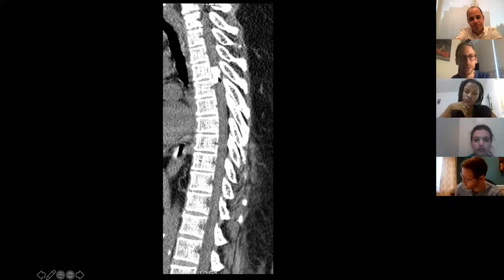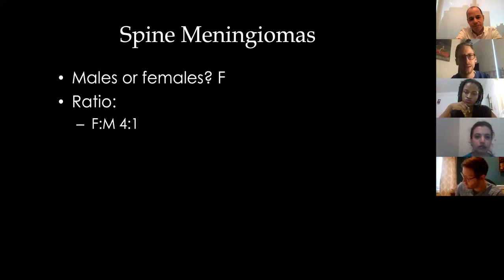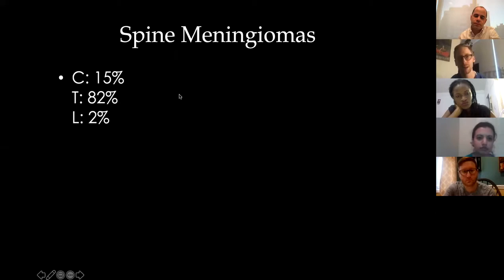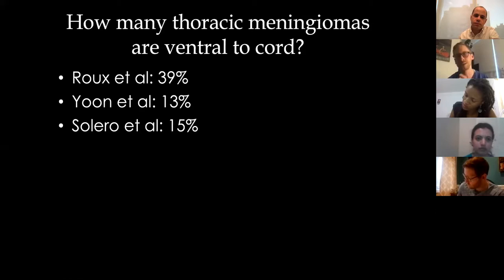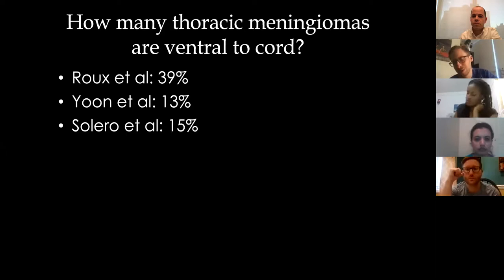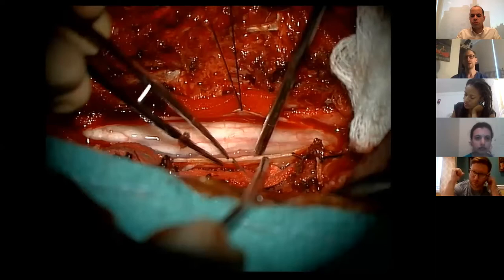This ended up being a meningioma. A very basic overview: they affect females more than males with a ratio of four to one — a significant female predominance. They're predominantly thoracic. There are two things that make this case challenging: number one, it's ventral to the spinal cord, so the spinal cord will be in our way; and the second thing is that it's calcified. How often are these tumors in front rather than behind the spinal cord? Three studies show between 13% and 40% of the time they're in front of the spinal cord — so it's not that rare.